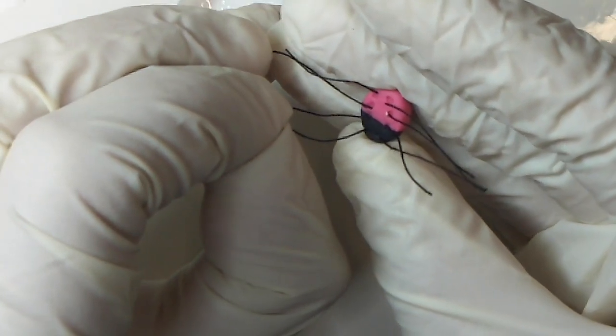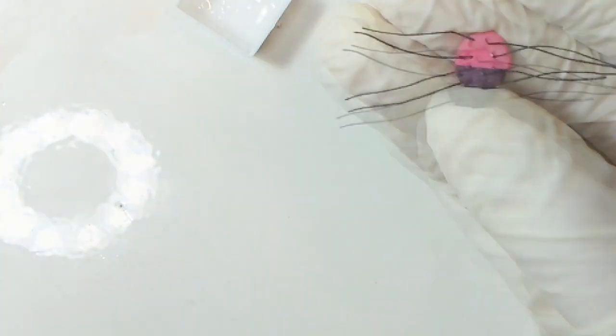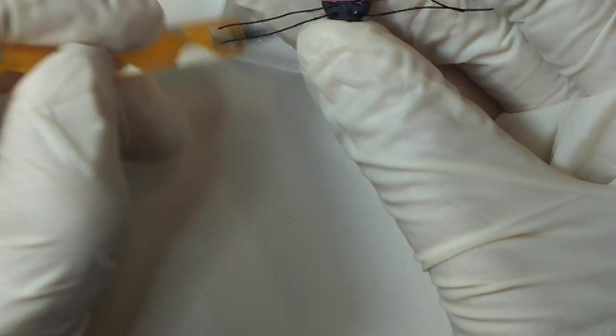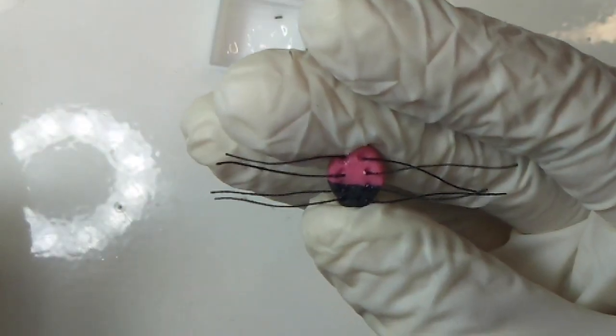Once you've added all the legs, give it a rest for a minute. Don't do anything to it. And then reinforce the legs with some more super glue with either your dotting tool or a toothpick. After reinforcing with more super glue, let it dry completely.